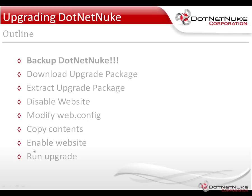The steps we're going to follow: we're going to back up .NET Nuke — that's the most important thing you should do when you do an upgrade, you should always back up .NET Nuke. Then I'll show you where to download the upgrade package for DNN, extract it, disable the website, modify the web.config file to prevent the upgrade from firing off automatically, copy the contents of the upgrade package over our website files, enable the website, and then run the upgrade.